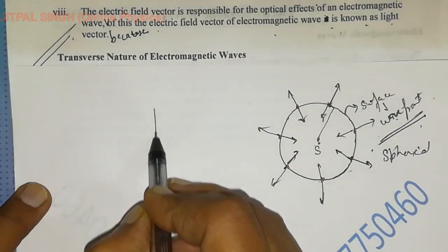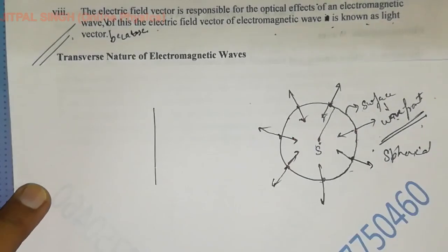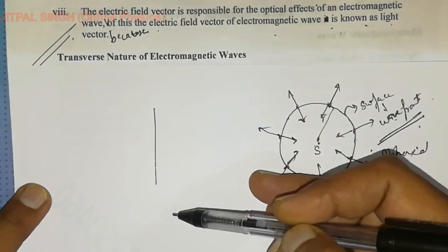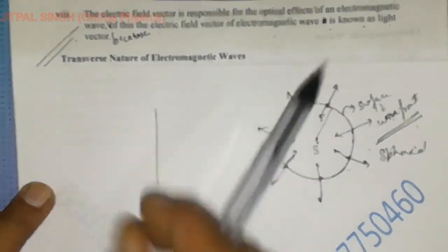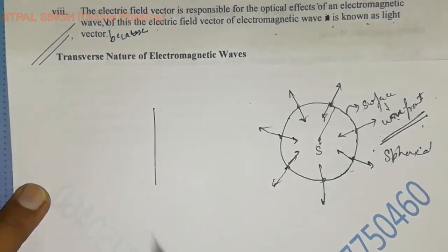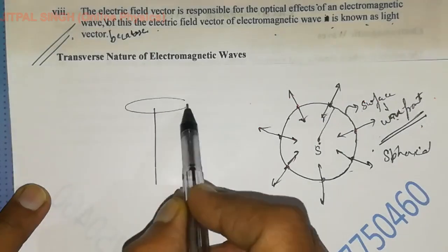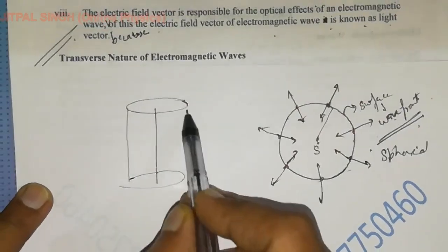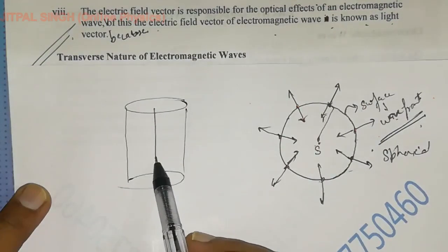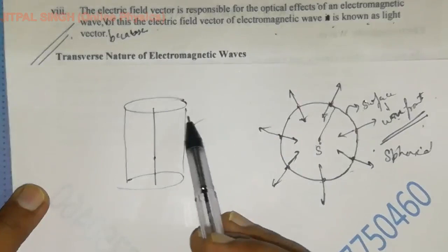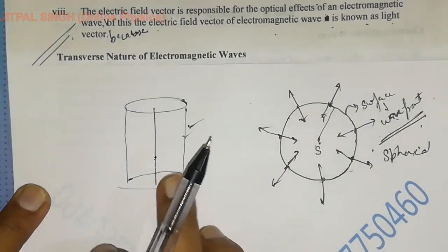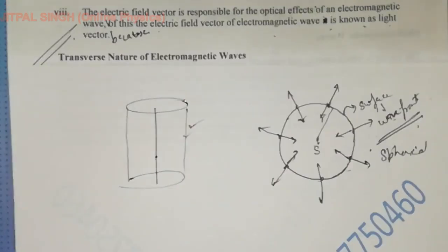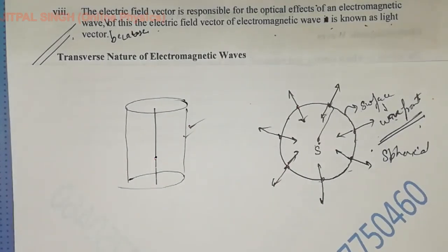If you take a linear source — suppose we have a light source which is in the form of a line or straight line, a linear source — it will radiate energy in all possible directions. When I say all possible directions, it actually radiates energy in a cylinder. So for a linear source, we will have a cylindrical wave front. All the particles lying on the curved surface of the cylinder will have the same phase of oscillation, so this cylinder is actually a wave front.